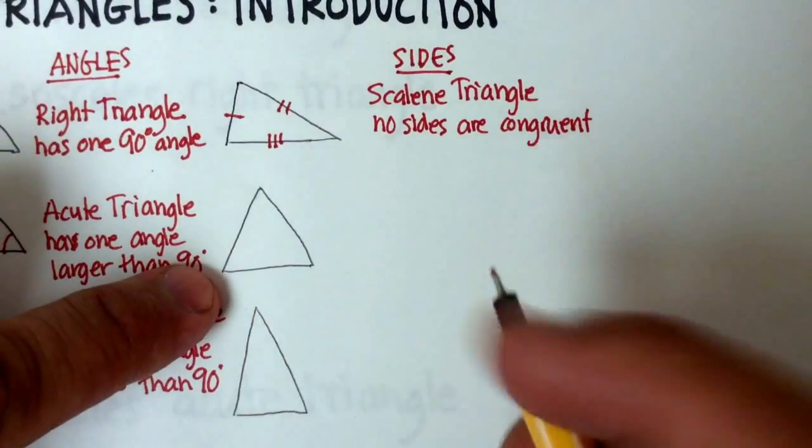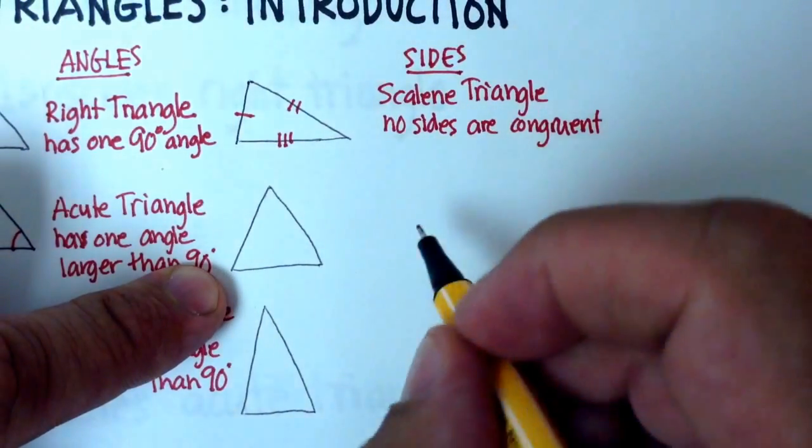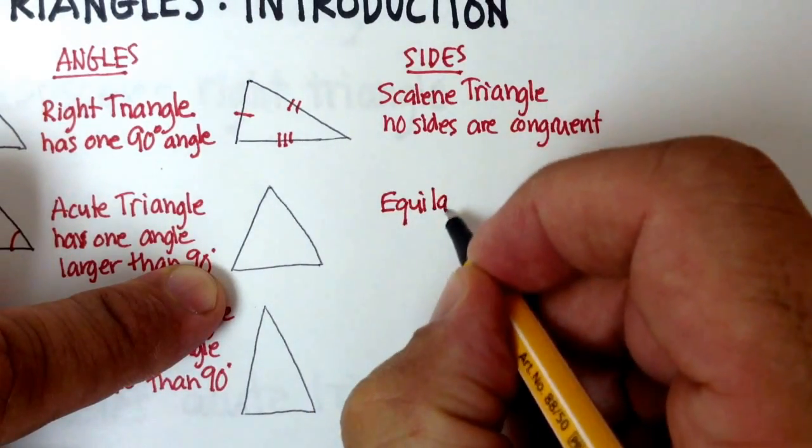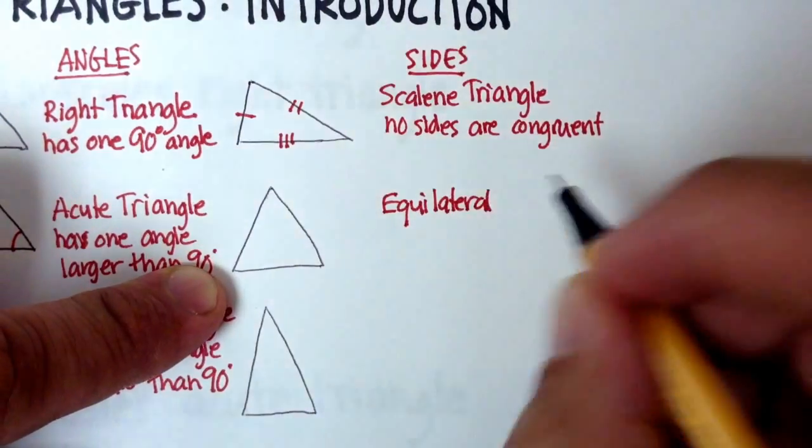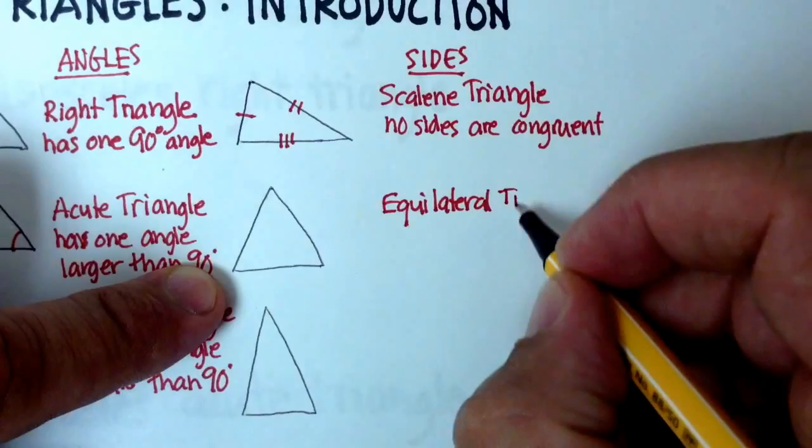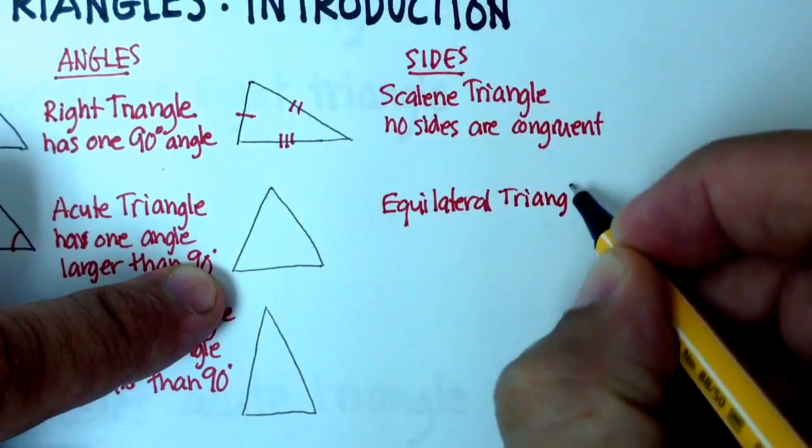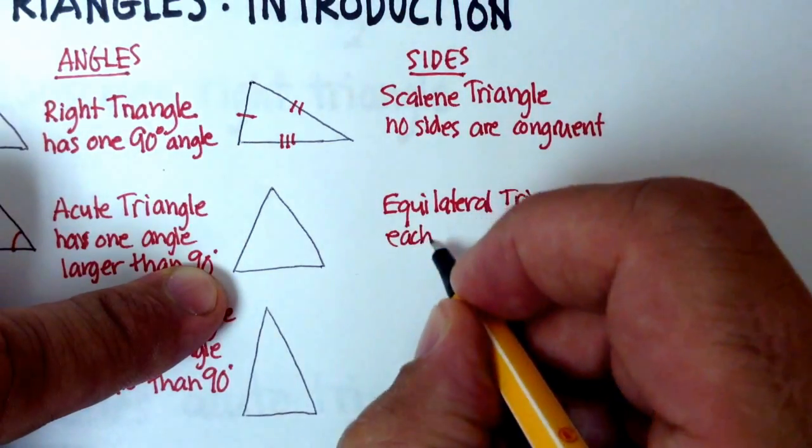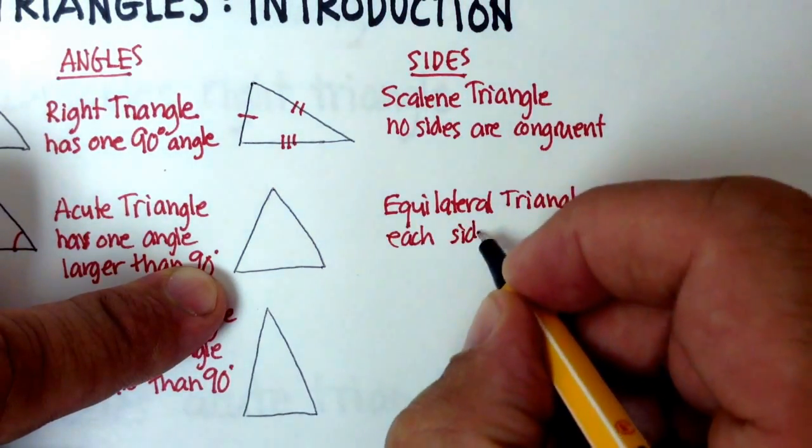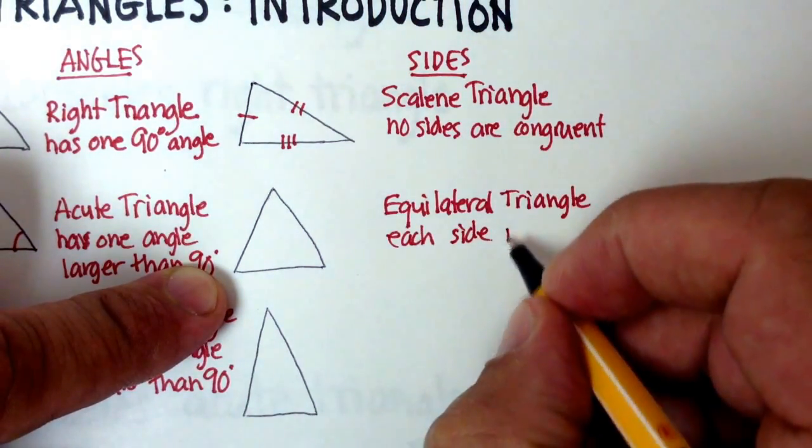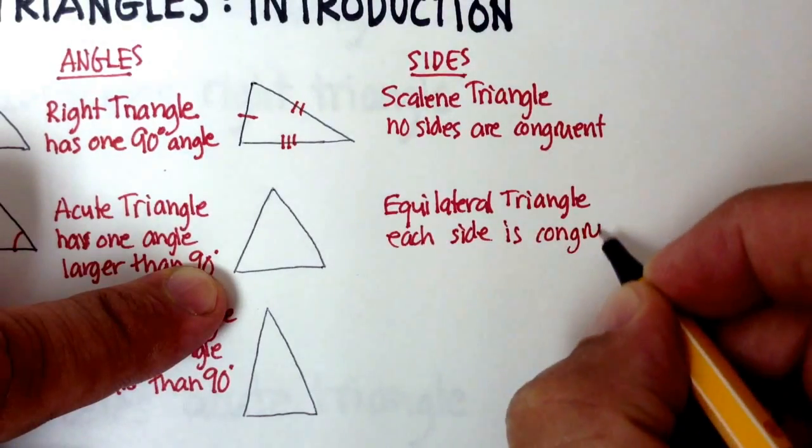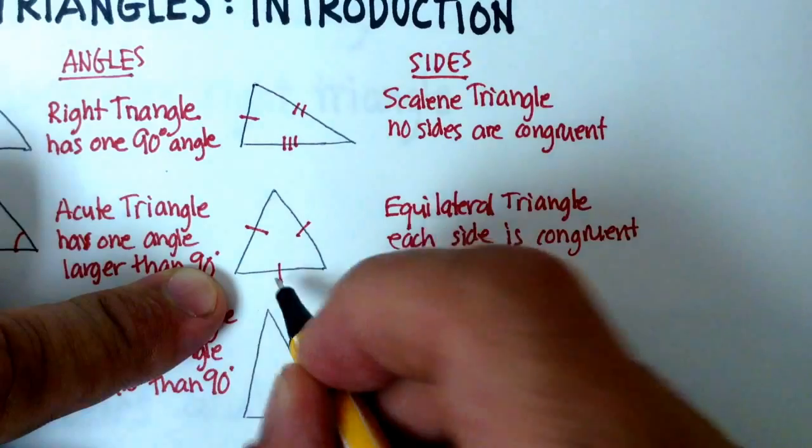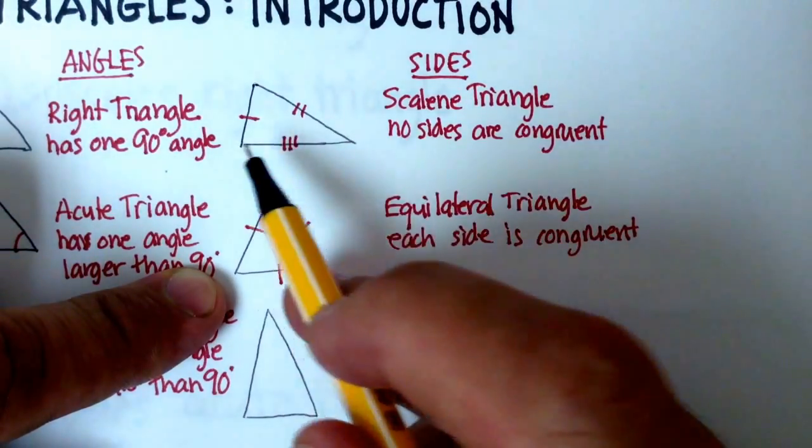This type of a triangle is called an equilateral triangle. And we talked about this in a previous video. An equilateral triangle means that each of the sides are equal. So each side is equal or is congruent. So how would I mark that? I would just do that, as compared to this, where they're all slightly different.